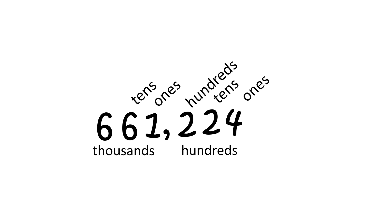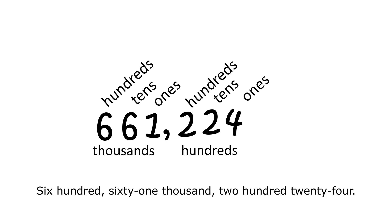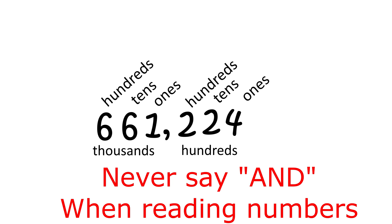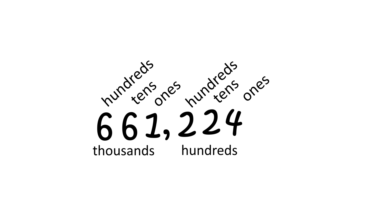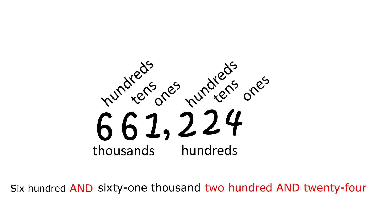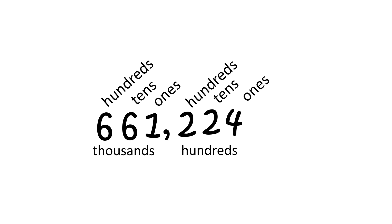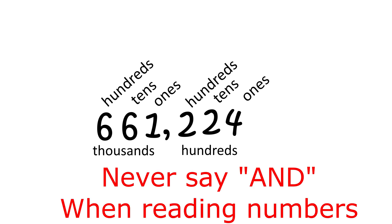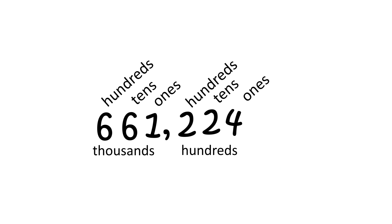Let's add another number 6 to this set, and this new 6 is in the 100,000 value. For example, if you read this number as 661,224 — that is wrong. Never say the word "and" when reading numbers to the left of the decimal.